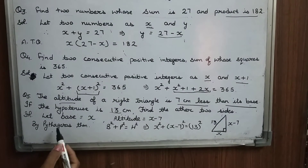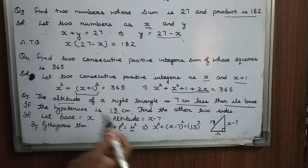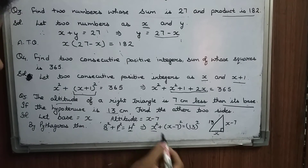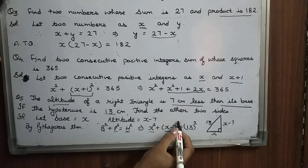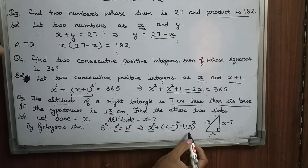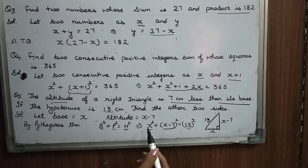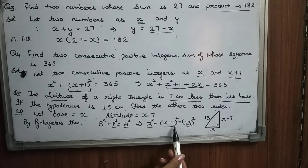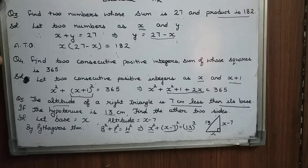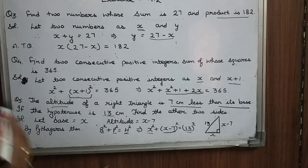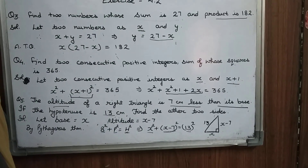Pythagoras theorem: base² plus perpendicular² equals hypotenuse². Our base is x, so x². Our perpendicular is x minus 7, so (x−7)² and hypotenuse is 13, so it is equal to 13². You can solve it using the identity (A minus B)² and we will get a quadratic equation which you can solve by the factorization method. This was the explanation of our Exercise 4.2. Thank you everyone.